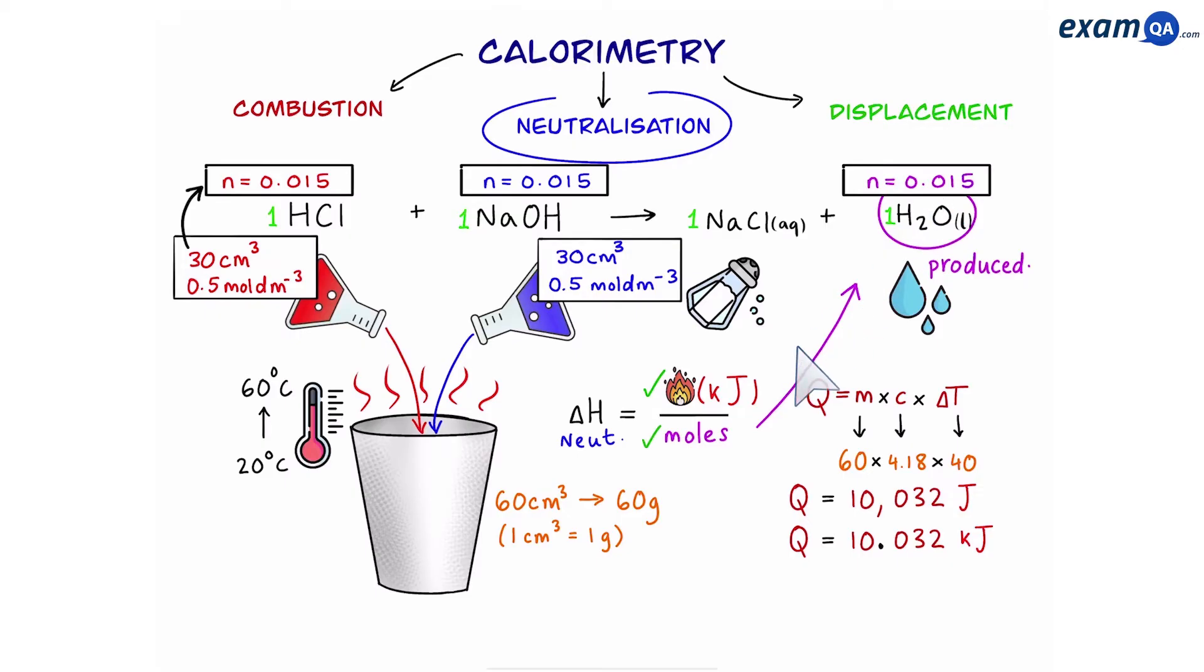Okay now we have the moles of water. So energy divided by water is going to give us enthalpy change and it's going to be 668 kilojoules per mole. Don't forget to put a minus in front of it because this reaction was exothermic and we know that because the temperature went up. If it went down then you just put a plus.